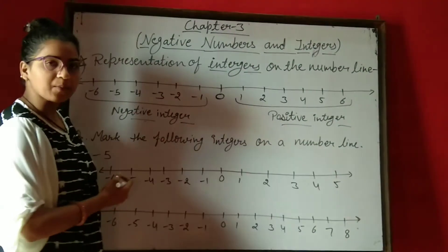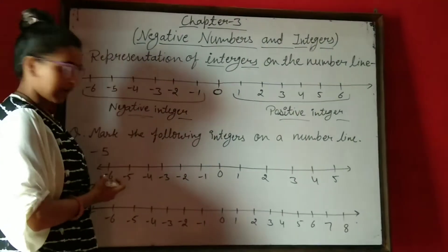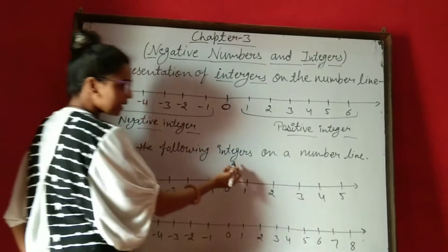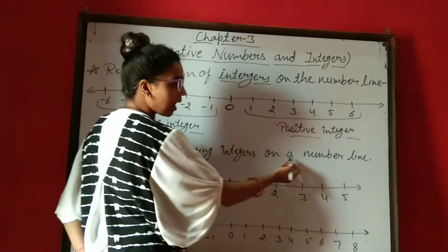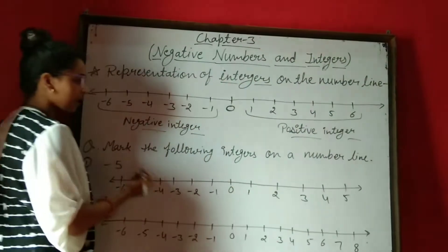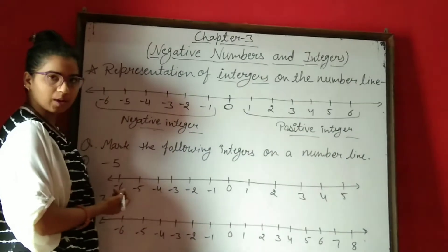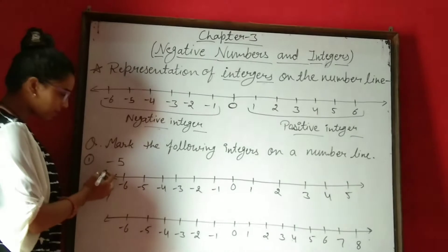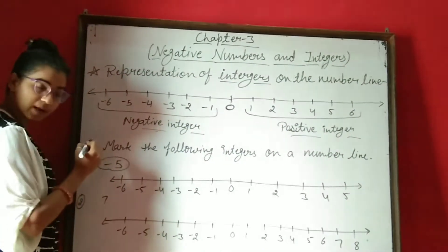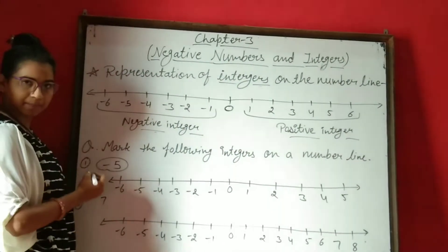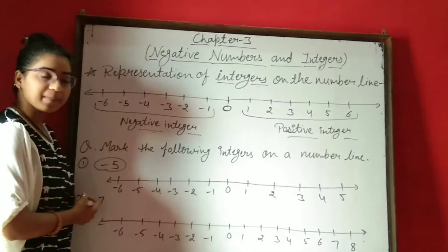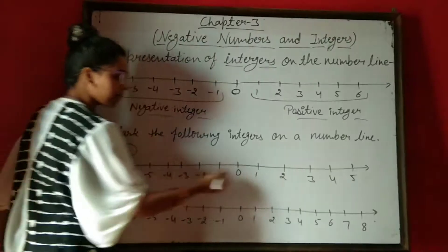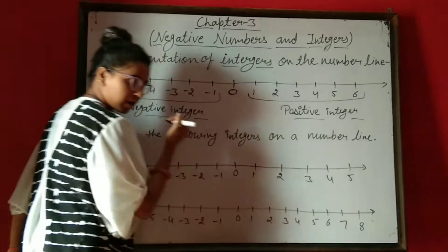Now we take some questions related to the number line. Mark the following integers on a number line. Means आपने given questions को number line पर represent करना है. First question is minus 5 — means आपने minus 5 को number line पर represent करना है. अब number line पर represent करने के लिए, हम सबसे पहले एक number line draw करते हैं.